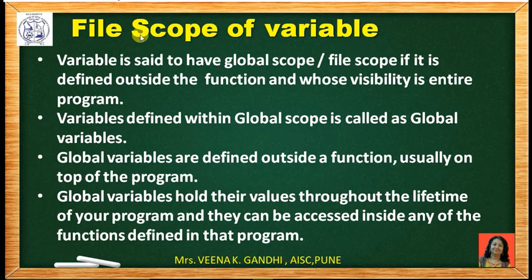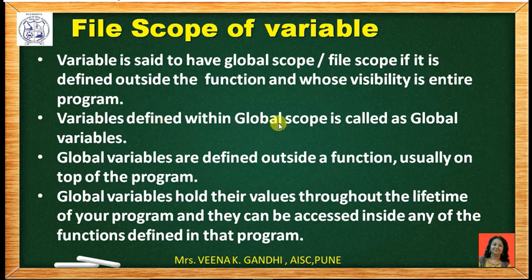File scope or global scope: a variable is said to have global scope or file scope if it is defined outside the function and its visibility is in the entire program — it can be accessed throughout the entire program. A variable defined within the global scope is called a global variable. Normally, global variables are defined outside the function, usually at the top of the program before the main function, and they hold their values throughout the life of the program.